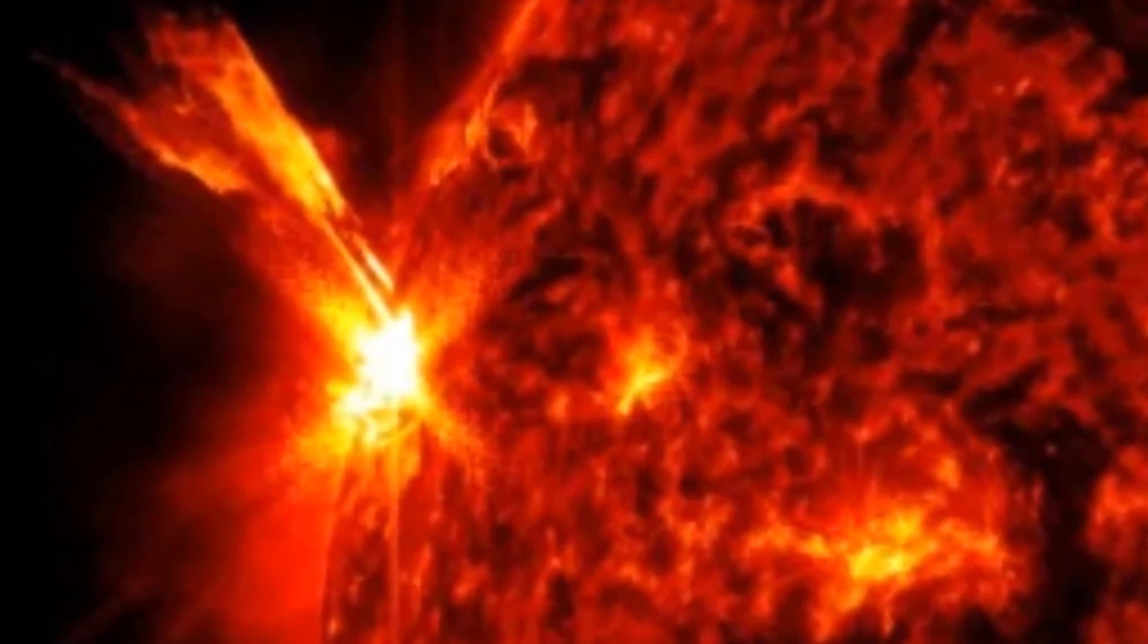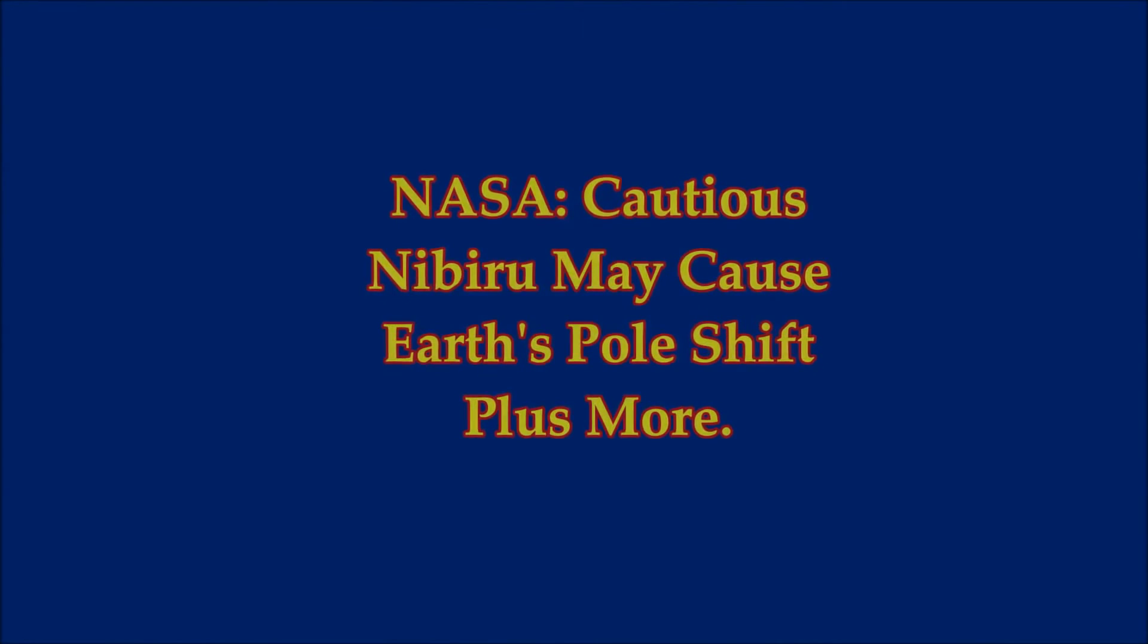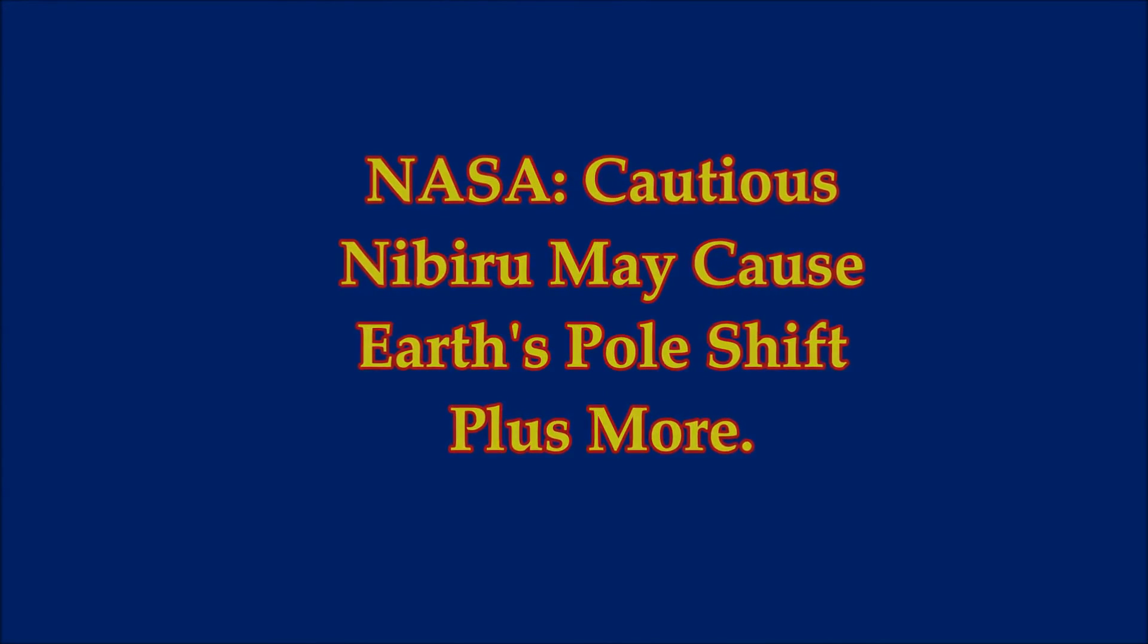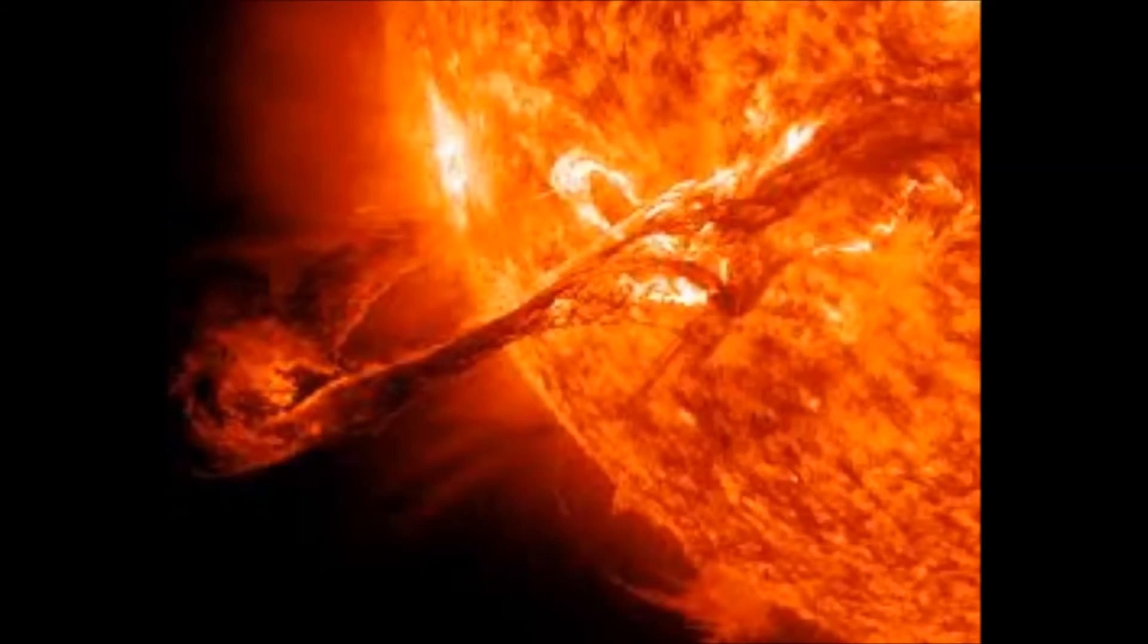NASA says, cautious, Nibiru may cause Earth's pole to shift, plus more. NASA have announced that the Earth may be about to experience a pole shift, leaving it unable to defend itself against solar radiation for up to 200 years, which would have devastating consequences for humans.